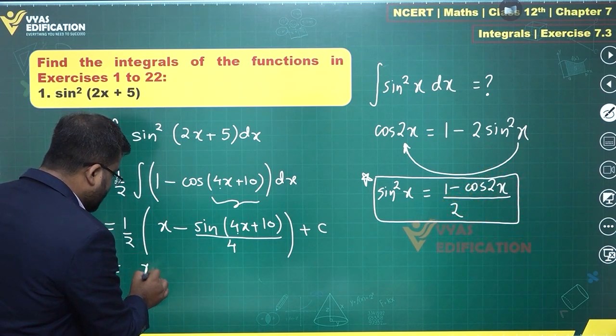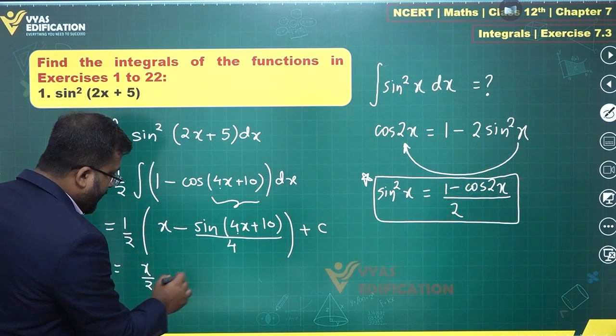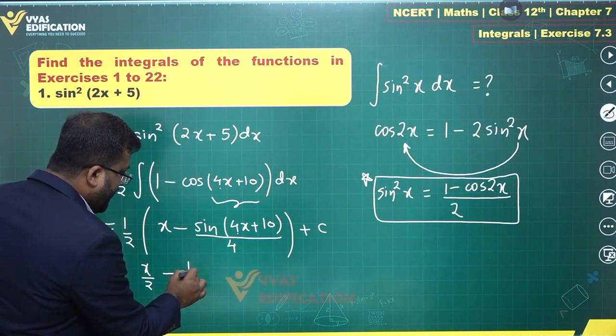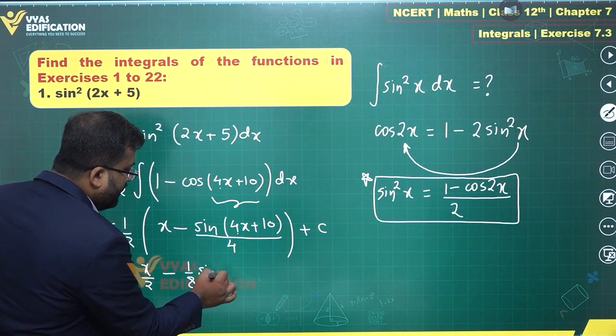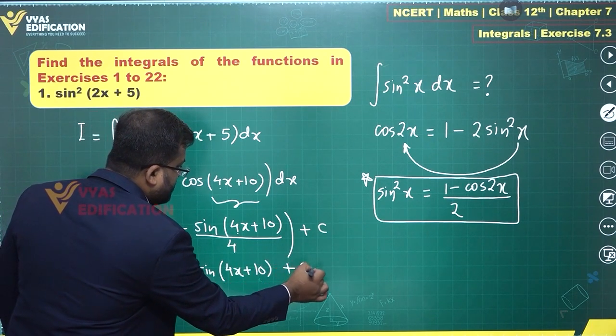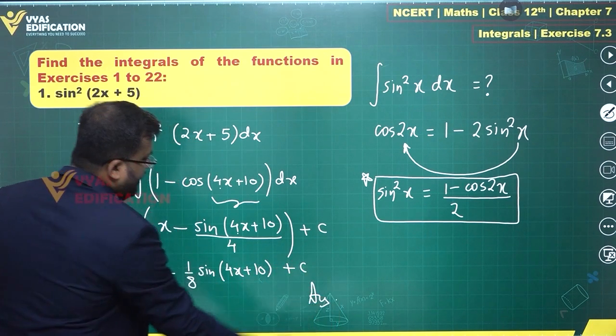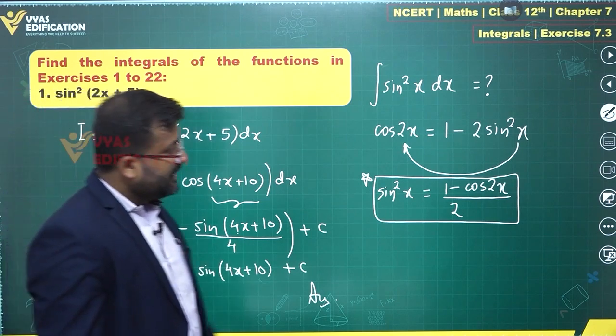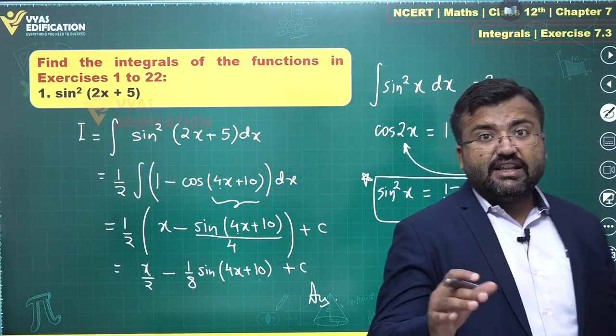Let's simplify this further. This is actually x/2 minus 1/8 sin(4x + 10) plus constant, and that is the required answer for this question.